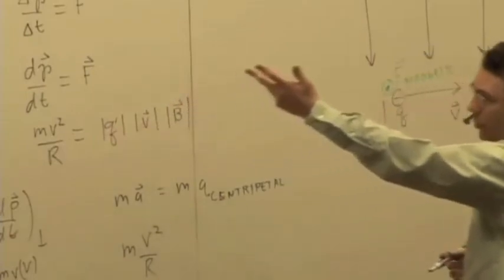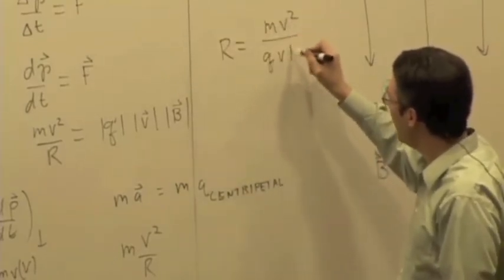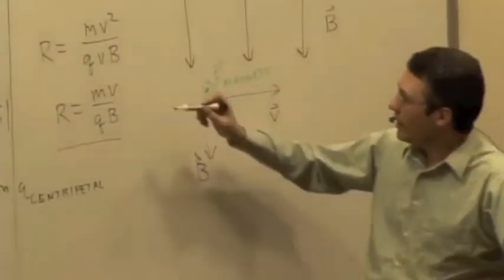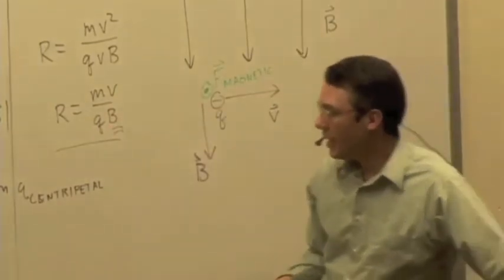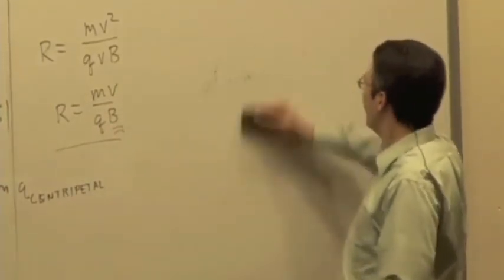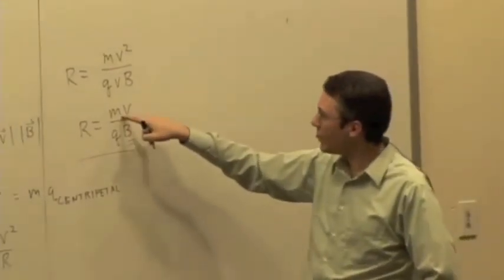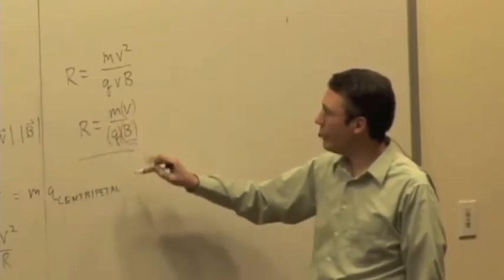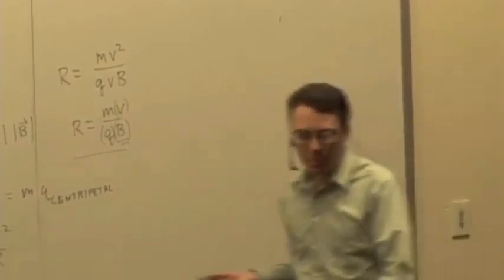If we knew the charge — say it's a proton — and we knew the magnetic field, the mass of the proton, and the speed, we could solve for the radius: R equals MV squared over QVB, which simplifies to MV over QB. This tells us the radius of the circle depends on mass, charge, magnetic field, and speed. There are lots of applications to this idea — anyone ever hear of a mass spectrometer? You want to determine the mass of a charged particle: send it through with a known velocity, known charge, into a known magnetic field. The bigger the radius, the bigger the mass.